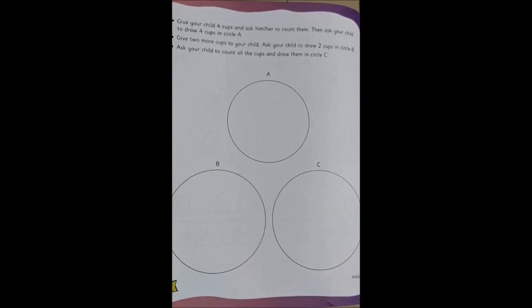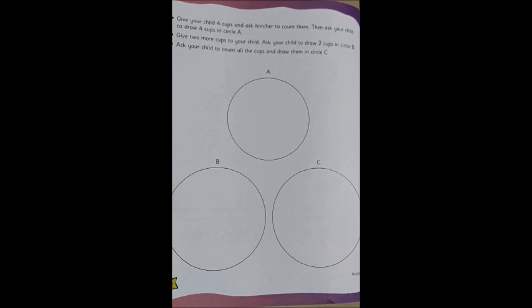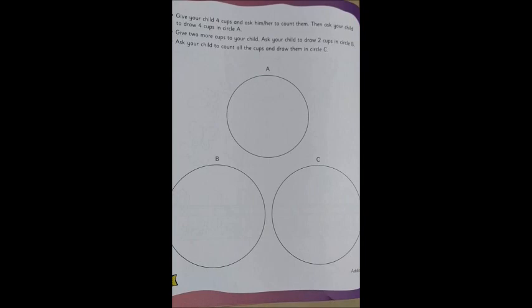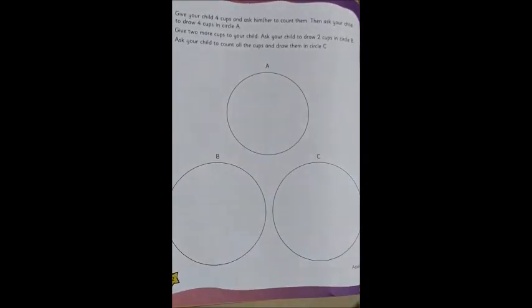Let's open our memories book to page 22. Let's see what we have to do. Give your child 4 cups and ask them to count. Then ask them to draw the 4 cups in circle A.